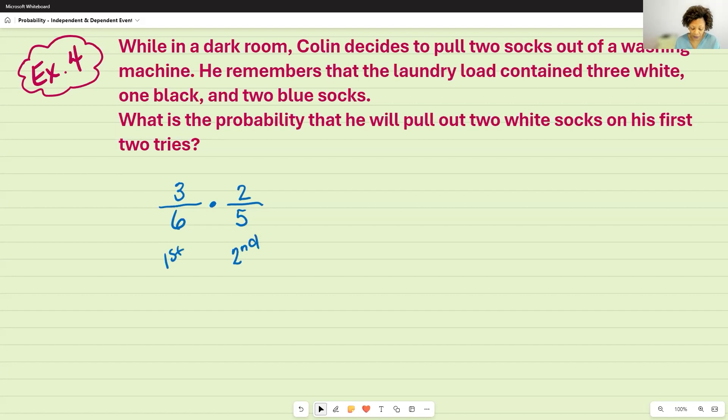So now, what is the probability of him actually pulling out two white socks? So again, you would just go ahead and multiply it. So going across three times two is six. Six times five is 30. But the simplest form is going to be dividing both of those by six, which leaves me with one over five.